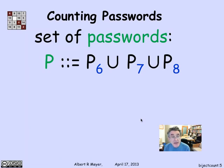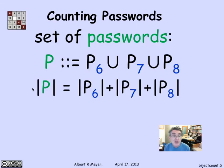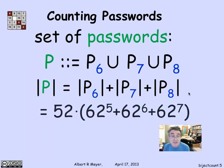What about the passwords? The passwords were P6 union P7 union P8. Since words of length 6 don't overlap with words of length 7 or 8, this is a disjoint union. Therefore, the total number of passwords as specified is simply the size of P6 plus the size of P7 plus the size of P8.